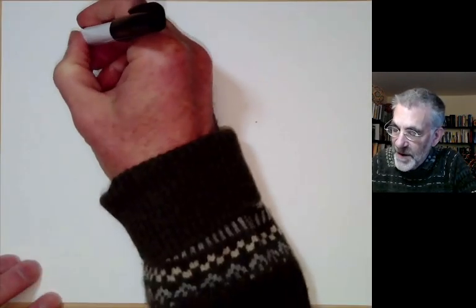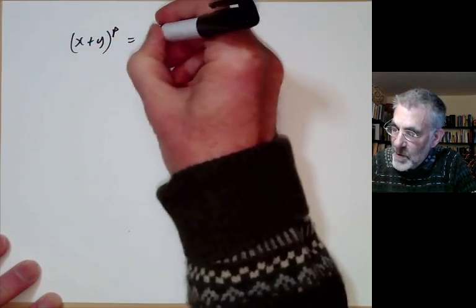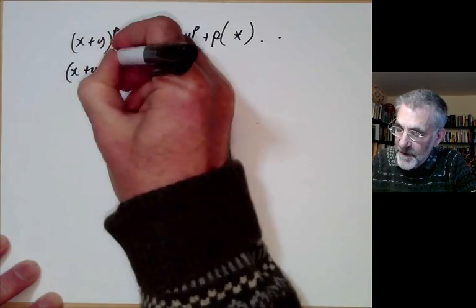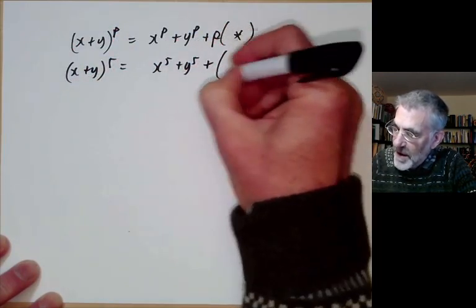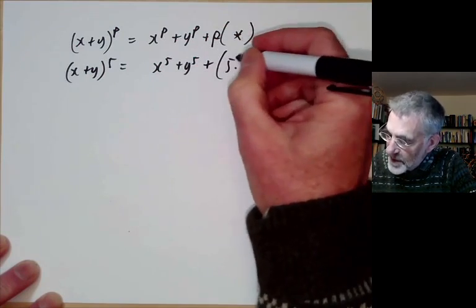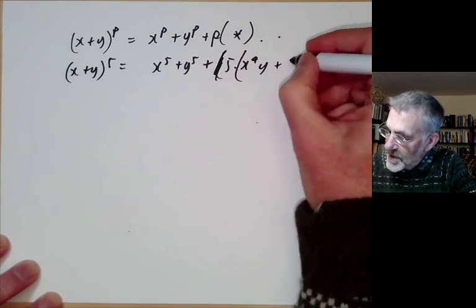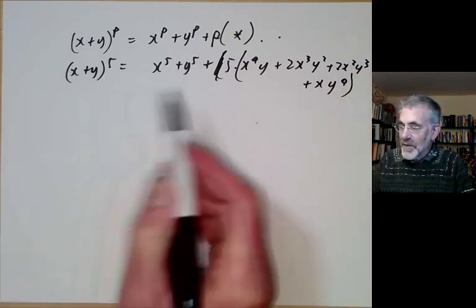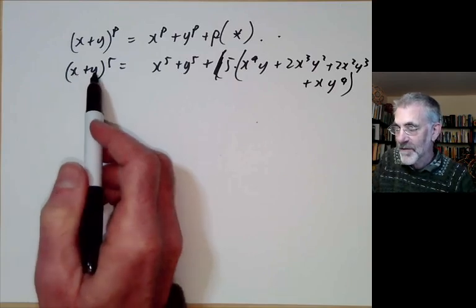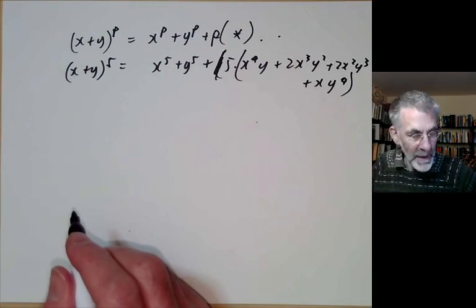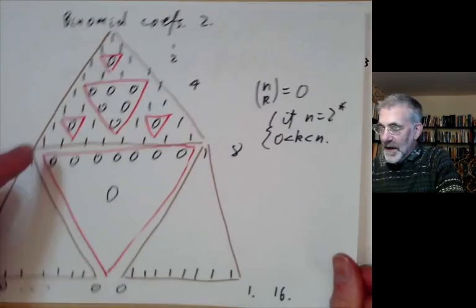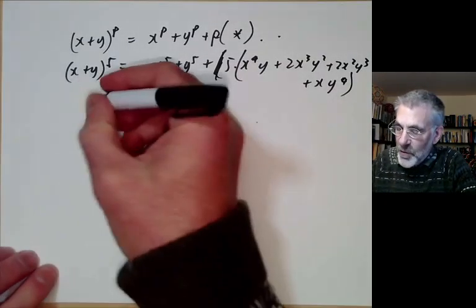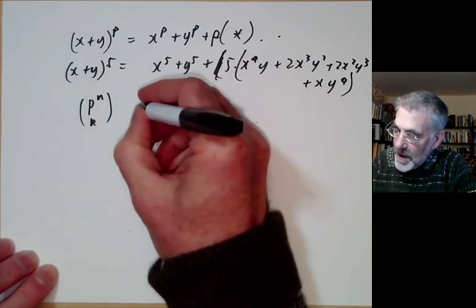This will be useful later when we give one of the proofs of Fermat's theorem. As a funny application: if we take (x + y)^p, this equals x^p + y^p plus something times p. For example, (x + y)^5 = x^5 + y^5 + 5(x^4·y + 2x^3·y^2 + 2x^2·y^3 + x·y^4). So if you ignore multiples of five, we have the nice formula that (x + y)^5 ≡ x^5 + y^5.